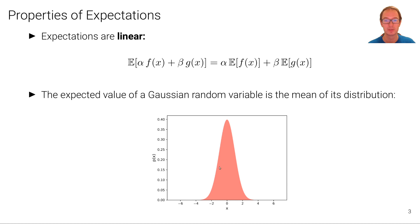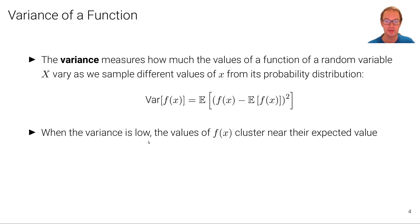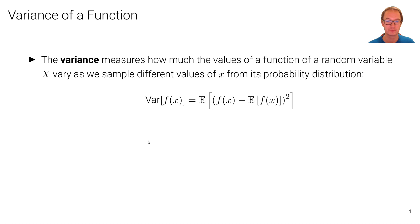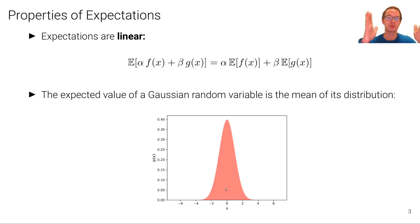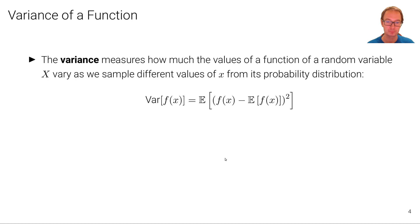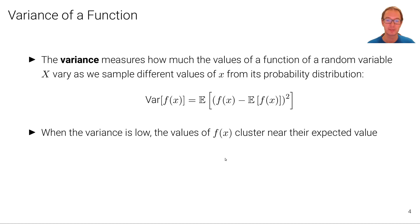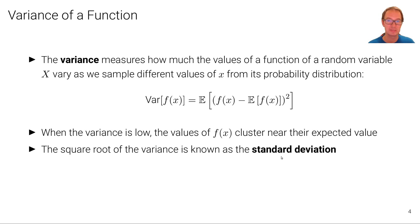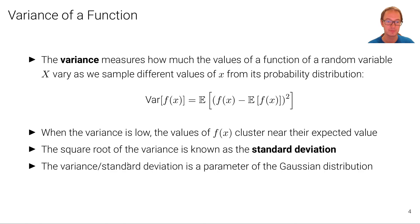For example, in the case of a Gaussian random variable, the variance determines the spread. When the variance is low, the values of f of x cluster near their expected value — we would get a much more narrow probability density function with a much larger maximum value. Conversely, if the variance is high, the distribution would spread out. The square root of the variance is known as the standard deviation, which is the parameter used to define the univariate Gaussian distribution.